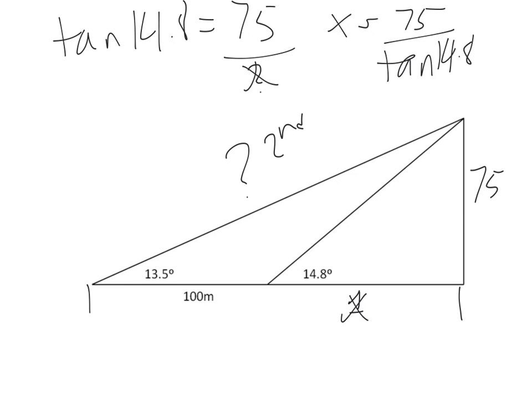This is good entertainment right here. 75 divided by 14.8 tangent equals, I'm in radians. 75 divided by 14.8 tangent equals 283.86 meters.